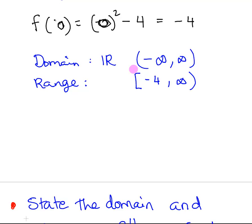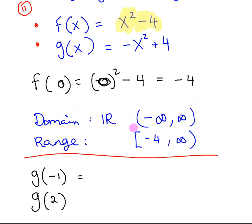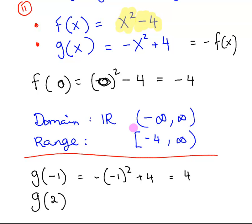Now let's do g of x equals minus x squared plus 4 — it is actually minus f of x. Evaluating g of minus 1: minus 1 times minus 1 squared plus 4, which works out to minus 1 plus 4, which is 3. Evaluating g of 2: that is minus 2 squared plus 4, which is minus 4 plus 4, equal to 0.